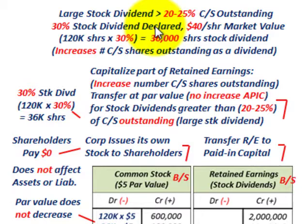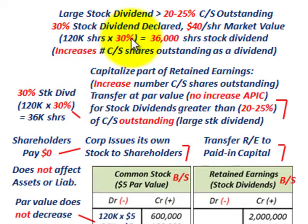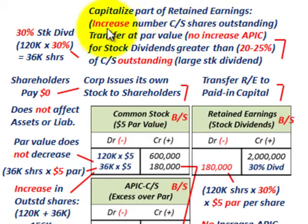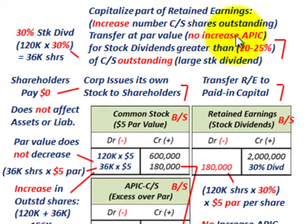For the large stock dividend, that's where your dividend is greater than the 20% to 25% hurdle rate of common stock outstanding. In this case, we're going to have a 30% stock dividend declared, and the market price is $40 per share — though this won't come into play. We have 120,000 shares outstanding times 30%, giving us 36,000 shares to distribute. We're going to capitalize part of retained earnings, but here we transfer at the par value of the stock, with no increase in additional paid-in capital.